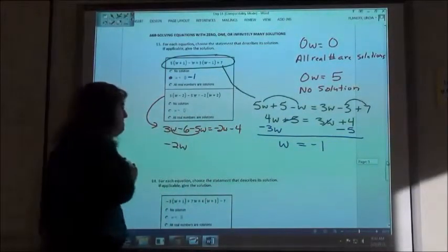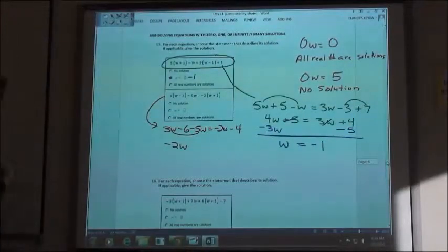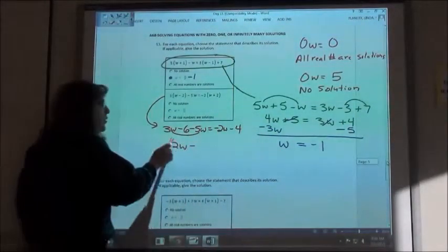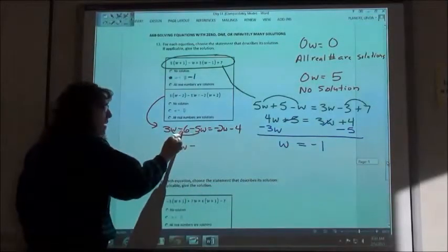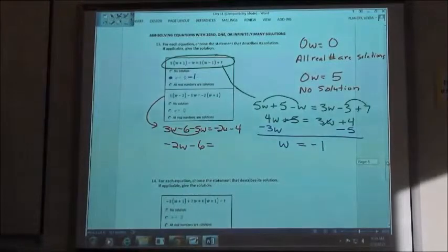Yep. That's right. Okay. So it's going to be negative 6 minus 2? Is that it? So you're going to have negative 2w minus 6. Minus 6. That's right. And that's all we have on that side.